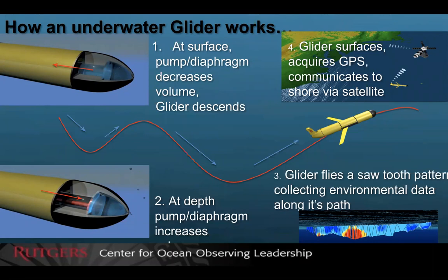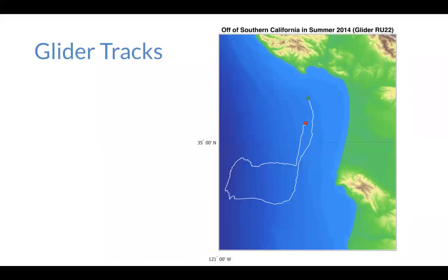In the tail of the glider there's a satellite phone, so scientists can release these gliders and they go out and dive up and down throughout the oceans. Once they come up to the surface, those data get relayed back to computers at Rutgers or with scientists here in New Jersey. We can have these gliders all around the ocean collecting information while we sit at our computers and make sense of the data.